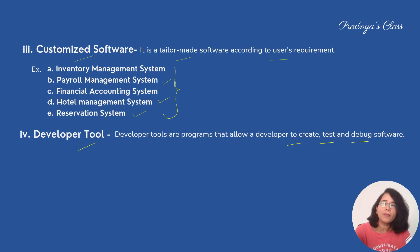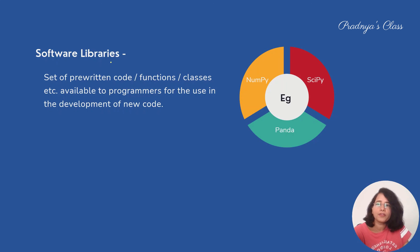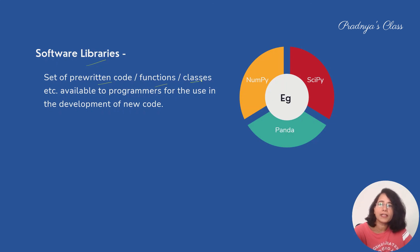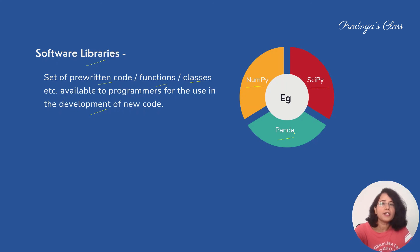Along with software, we also have libraries. Just as a real-life library has a collection of books we can borrow and use, in computing we have pre-written codes, functions, and classes stored in libraries that we can use for developing new code. Some examples of libraries in Python are NumPy, SciPy, and Pandas, which we are going to study in further chapters.